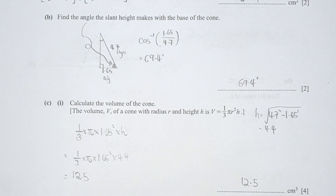For the cone volume, the missing value is the height of the cone, which you can find using the Pythagorean theorem. I took the square root of 4.7² minus 1.65², giving a height of 4.4. After calculation, you will get a final result of 12.5 cm³.